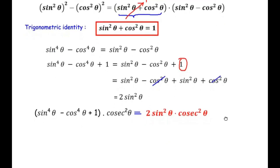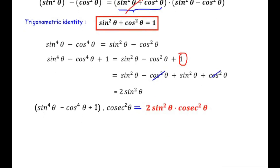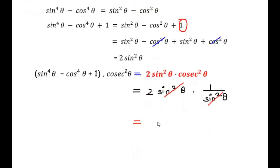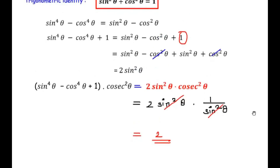So 2sin²θ multiplied by cosec²θ. Since cosec is the reciprocal of sine, cosec²θ = 1/sin²θ. So we have 2sin²θ × (1/sin²θ). The sin²θ in the numerator cancels with the sin²θ in the denominator and we are left with 2. This is what we had to prove: (sin⁴θ - cos⁴θ + 1) × cosec²θ = 2. We proved it using the algebraic identity and trigonometric identity.